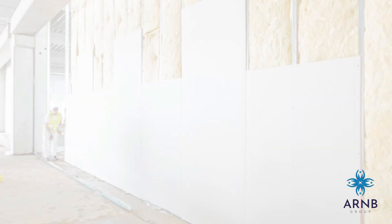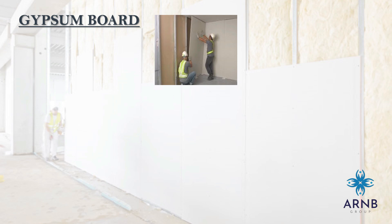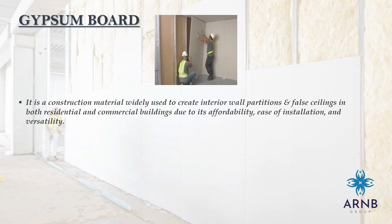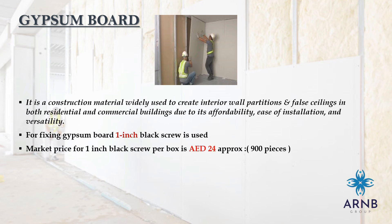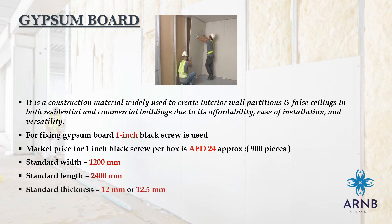The next step is to cover the support system using gypsum board by fixing it onto the track and stud. Gypsum board is a construction material widely used to create interior wall partitions and false ceilings in both residential and commercial buildings, due to its affordability, ease of installation, and versatility. A 1-inch black screw is used for fixing gypsum board, with a market price of approximately 24 AED for 900 pieces per box. Standard width is 1200 mm and standard length is 2400 mm. Both 12 mm and 12.5 mm gypsum boards are available in the market.